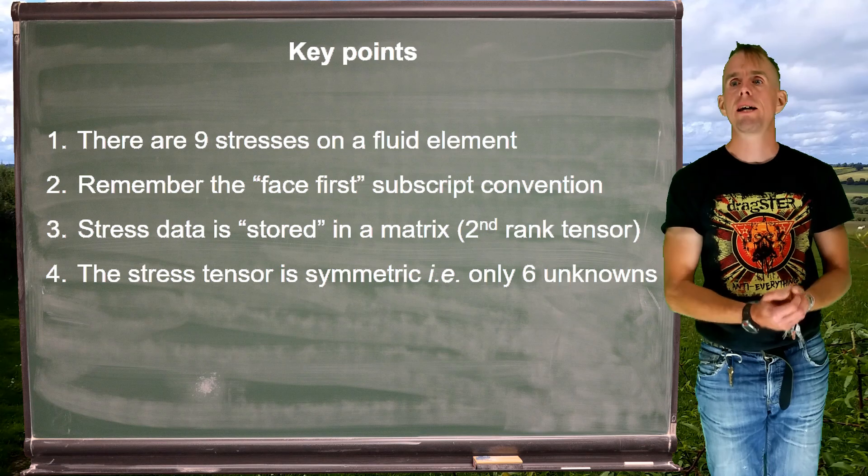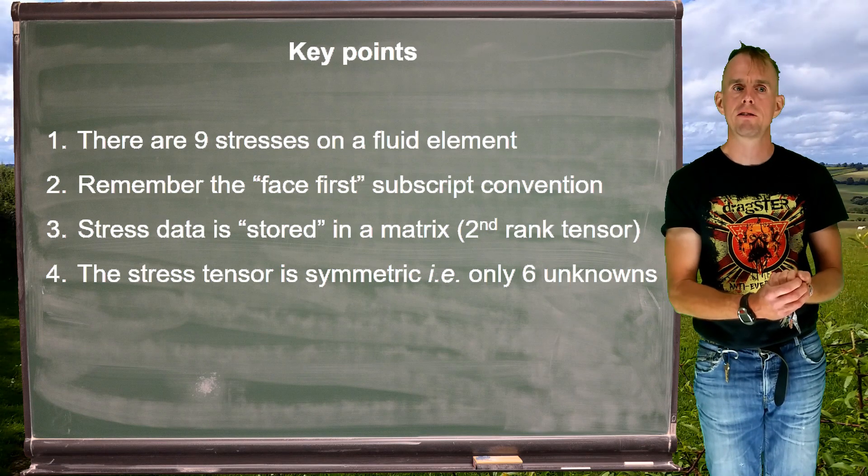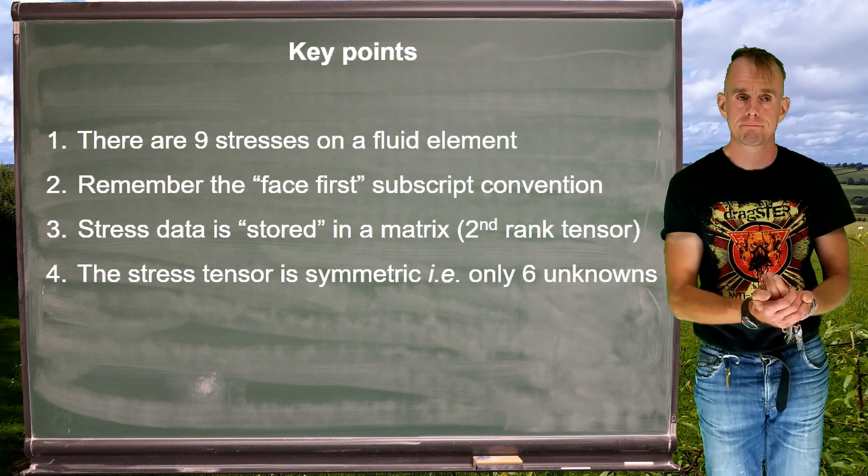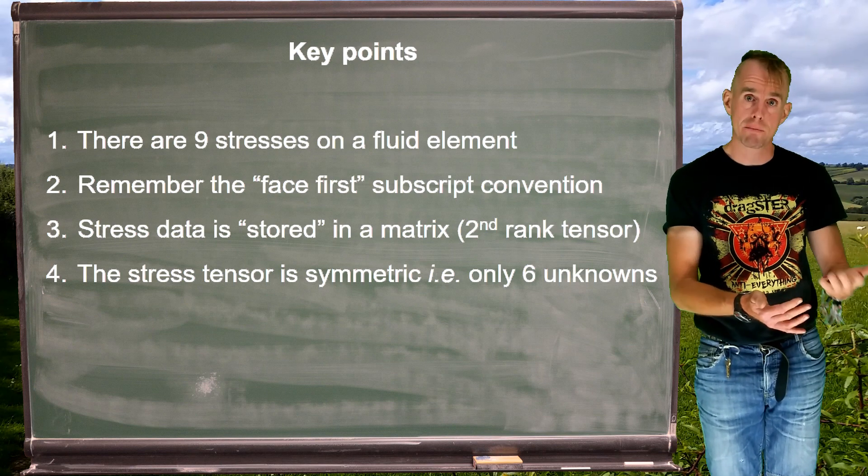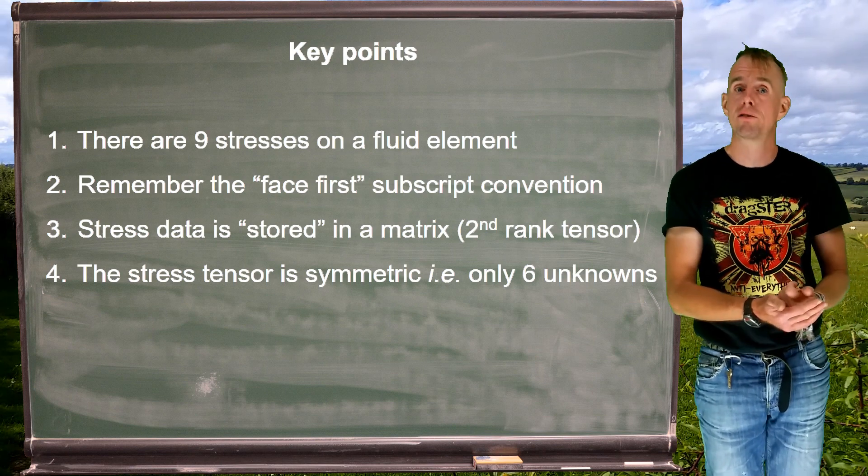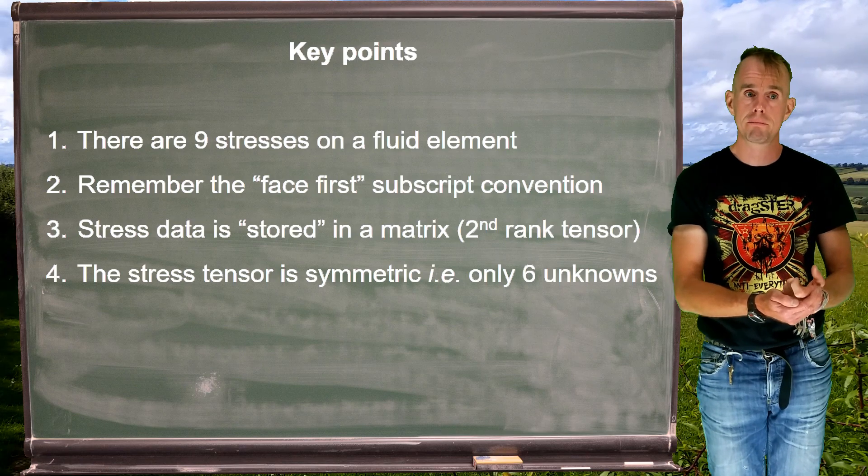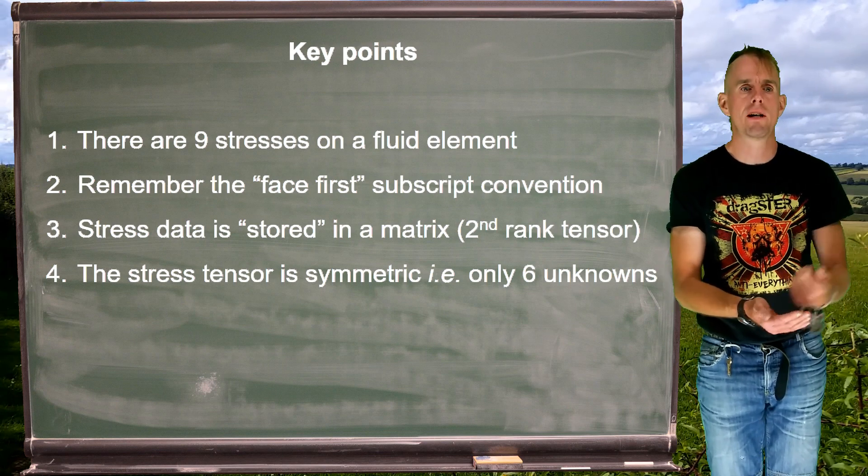So let's recap some key points. If we think of a fundamental fluid element, there are nine stresses that we could possibly imagine to be there. We store this stress information in a tensor, a three by three or sometimes a two by two matrix, if we're only dealing with two parts of a coordinate system. And when we access individual elements of that tensor, we have this subscript notation.